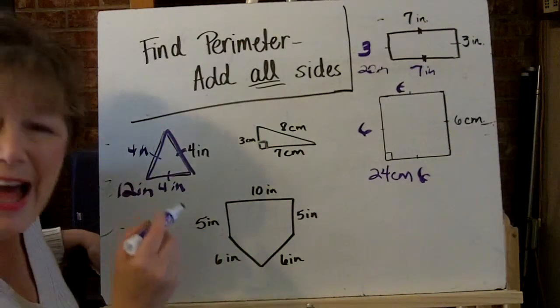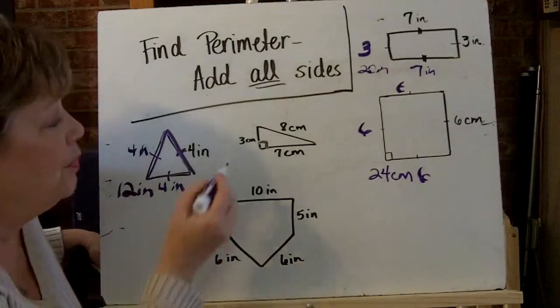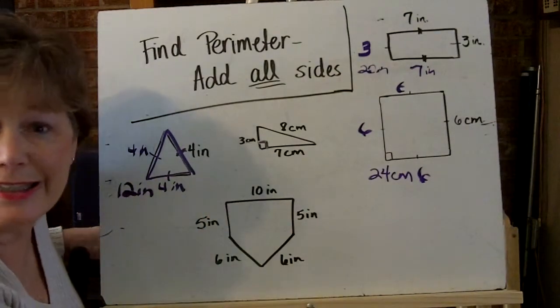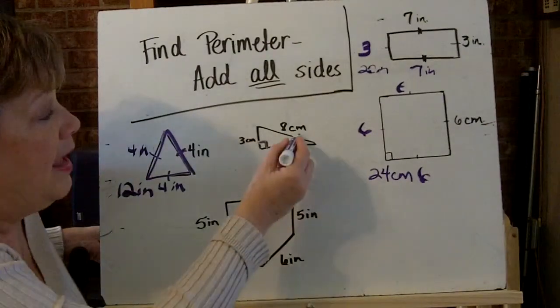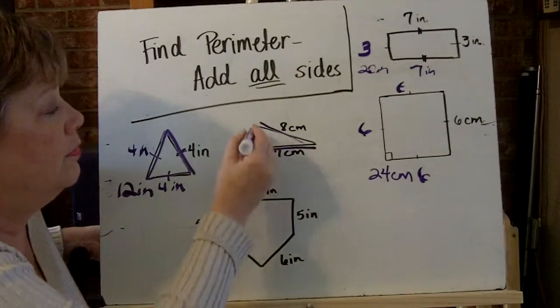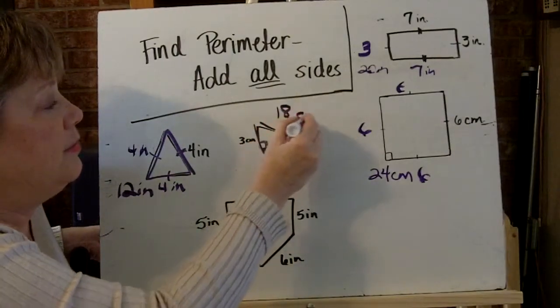So to find out this perimeter, I'm going to simply add all the sides. You can start wherever you want to. I like to find something I can do in my brain pretty easily. I can do 3 plus 7 pretty easily. That's 10 centimeters. And then add 8 more. This perimeter is 18 centimeters.